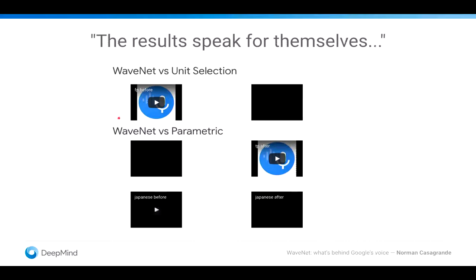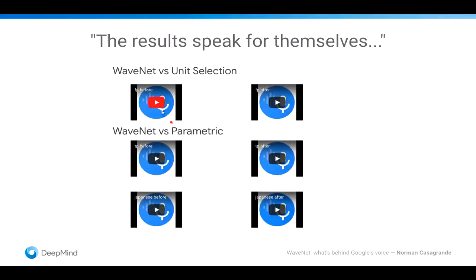Now, the problem. And the results speak for themselves. I think we already had a bunch of examples. Maybe I'll play just one more. So, this is before: A single WaveNet can capture the characteristics of many different speakers with equal fidelity. This is unit selection. This is WaveNet: A single WaveNet can capture the characteristics of many different speakers with equal fidelity. And then the parametric version: A single WaveNet can capture the characteristics of many different speakers with equal fidelity.